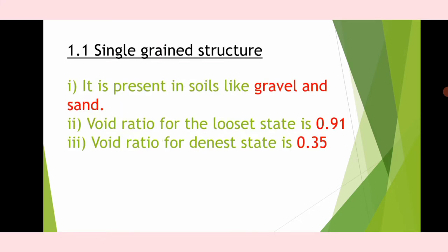The first structure is single grain structure. It is present in soils like gravel and sand. The void ratio for the loose state is 0.91 and the void ratio for the dense state is 0.31.